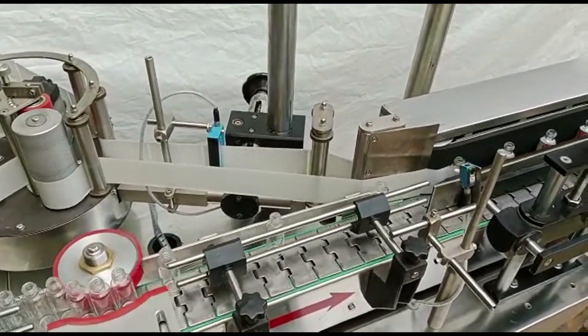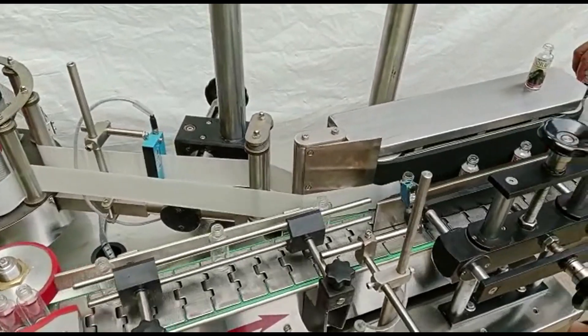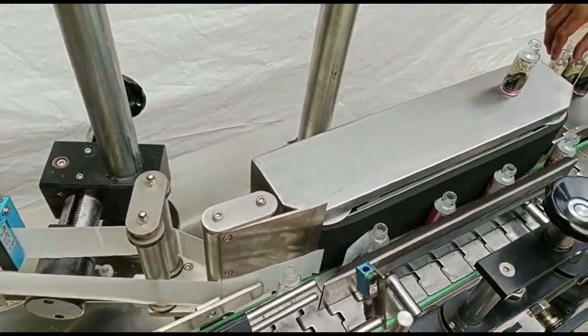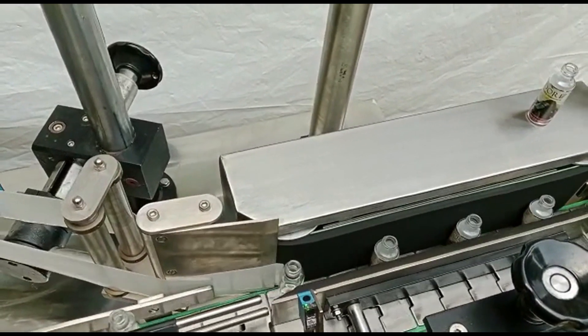This type of labeling is commonly used for cylindrical or curved surfaces like bottles, jars, cans, tubes, and other similar items.